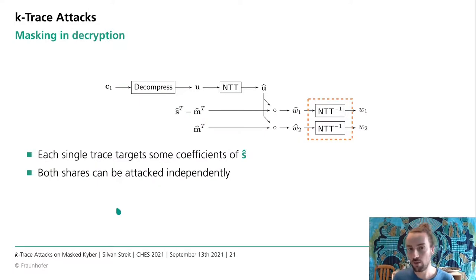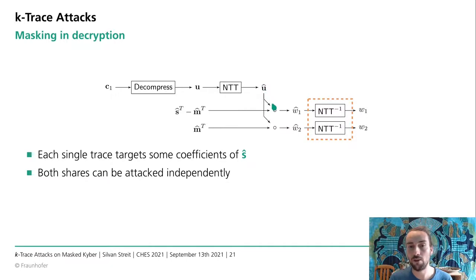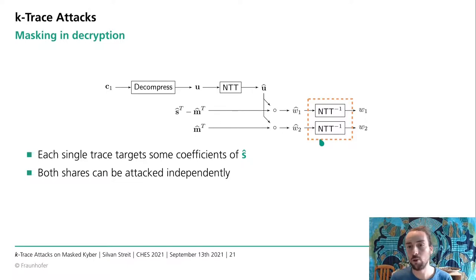Last but not least, how does masking affect our attack? We could not find a masked implementation to verify this with. However, normal masking considers masking of the secret, splitting it into two shares and performing computation on each share individually. Our ciphertext is publicly known, so there is normally no need to mask it, and thus our sparse vector is multiplied to each of the two shares individually. We can attack both shares independently and combine them within the same trace, so our attack is barely affected by masking — we recover the same coefficients of S-hat within the same trace, then combine traces once we know the unmasked coefficients of S-hat.